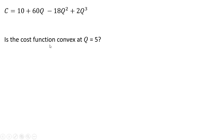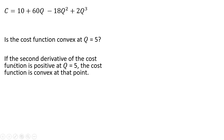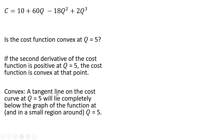Taking the same cost function, but this time looking at whether the graph is convex at q equals 5, a different point. If the second derivative of the cost function is positive at q equals 5, the cost function is convex at that point. That means a tangent line at q equals 5 will lie completely below the graph of the cost function at or near q equals 5.